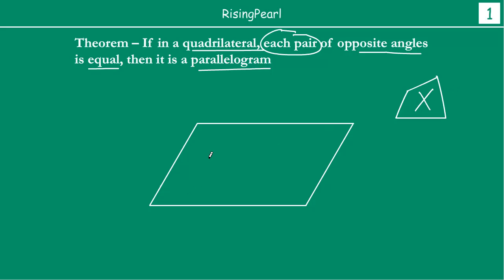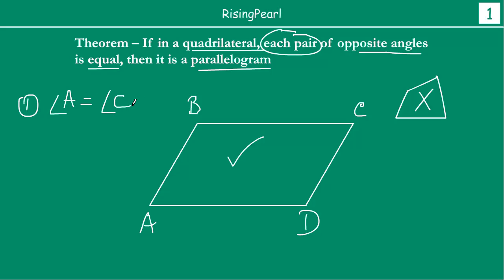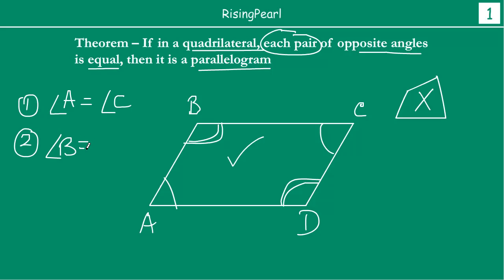Now, when you have to prove in the theorem that a quadrilateral is a parallelogram, you know that eventually you need a parallelogram. So you do not want to start with a figure that will never be a parallelogram. Since we know our quadrilateral will become a parallelogram, we draw a parallelogram from the beginning — ABCD. What is given to us? Angle A is equal to angle C, and angle B is equal to angle D. These are each pair of opposite angles. So we have these two conditions and we say this is actually a parallelogram.